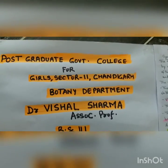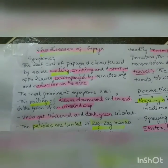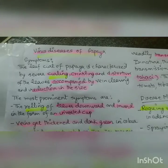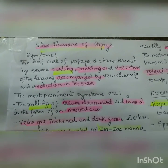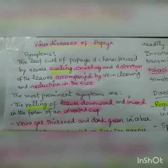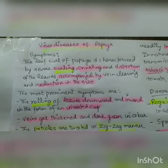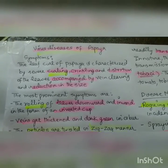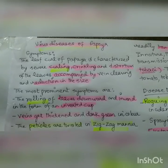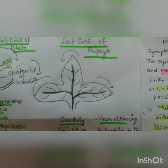Welcome back. Today we are doing the last part of the viral diseases. The first disease we are doing is the virus diseases of papaya — specifically the leaf curl of papaya, which is characterized by curling, crinkling and distortion of leaves. This is the leaf curl of papaya, where the leaf starts curling inwards.